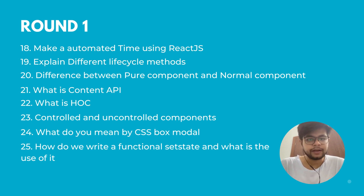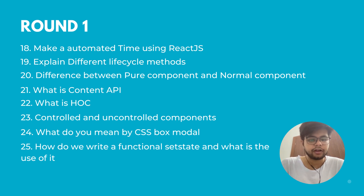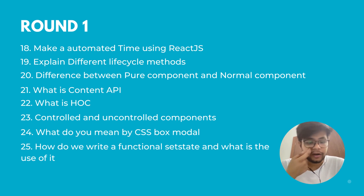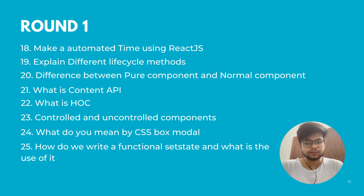Question twenty-one was: what is the Context API and why do you need it? The twenty-second was: what are higher-order components — give a sample higher-order component, write one, and explain how you would apply it to different components. The twenty-third was: what are controlled and uncontrolled components — give an example. The twenty-fifth was: how do you write a functional component's setState and what is the use of it?